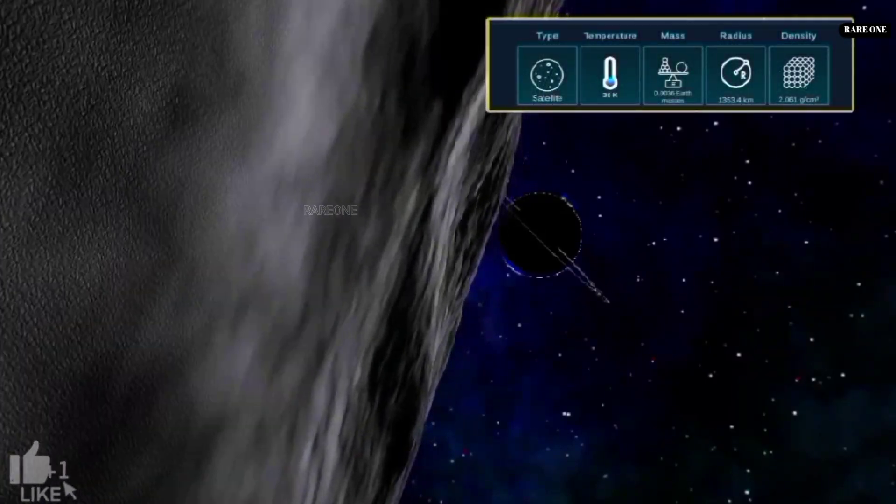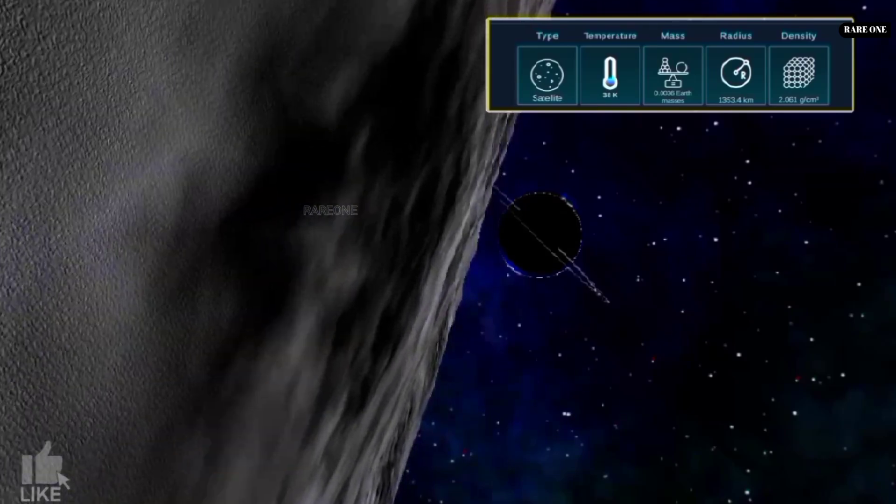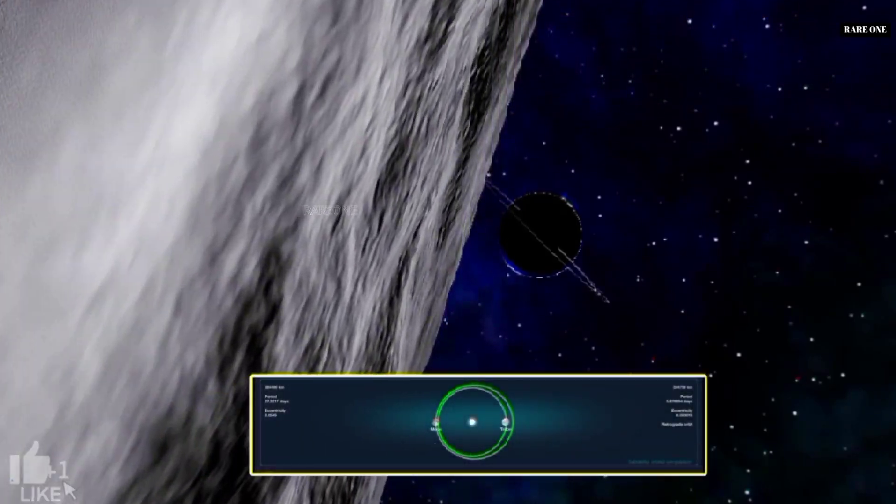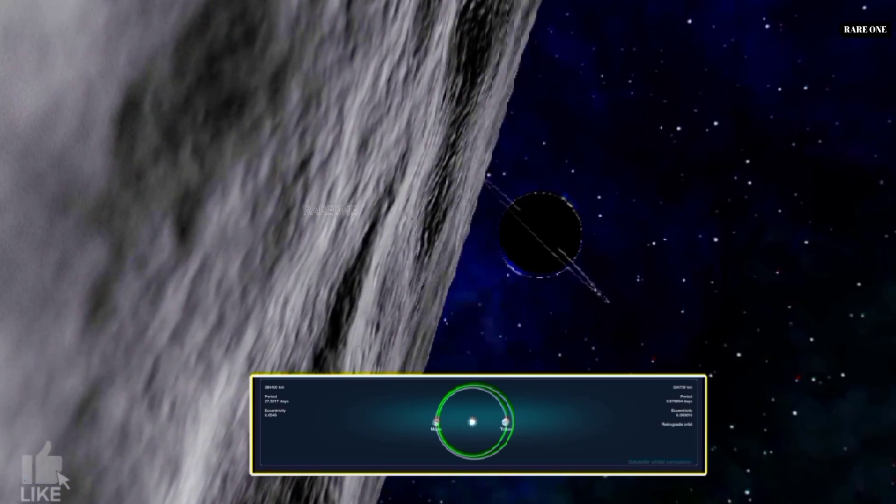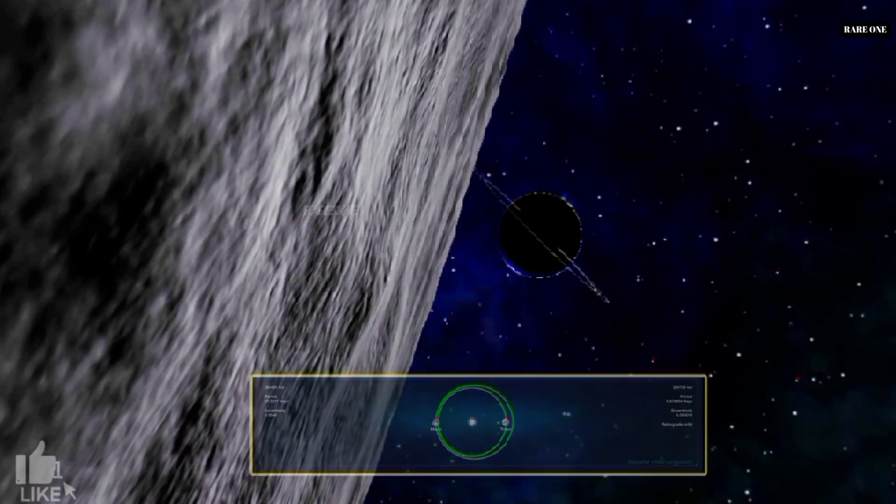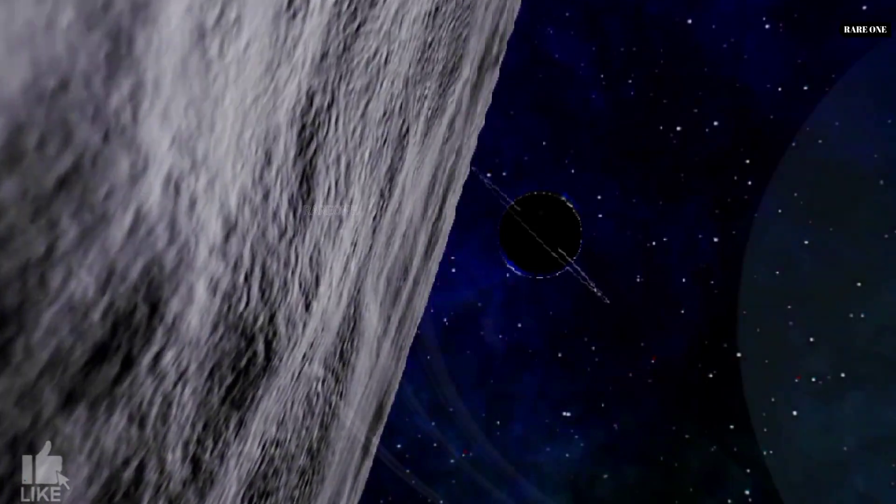Despite surface temperatures of around minus 235 degrees Celsius, Triton exhibits remarkable activity, with geysers spewing material over 8 kilometers high. Voyager 2 also discovered Triton has a thin atmosphere that appears to be growing warmer for unknown reasons.